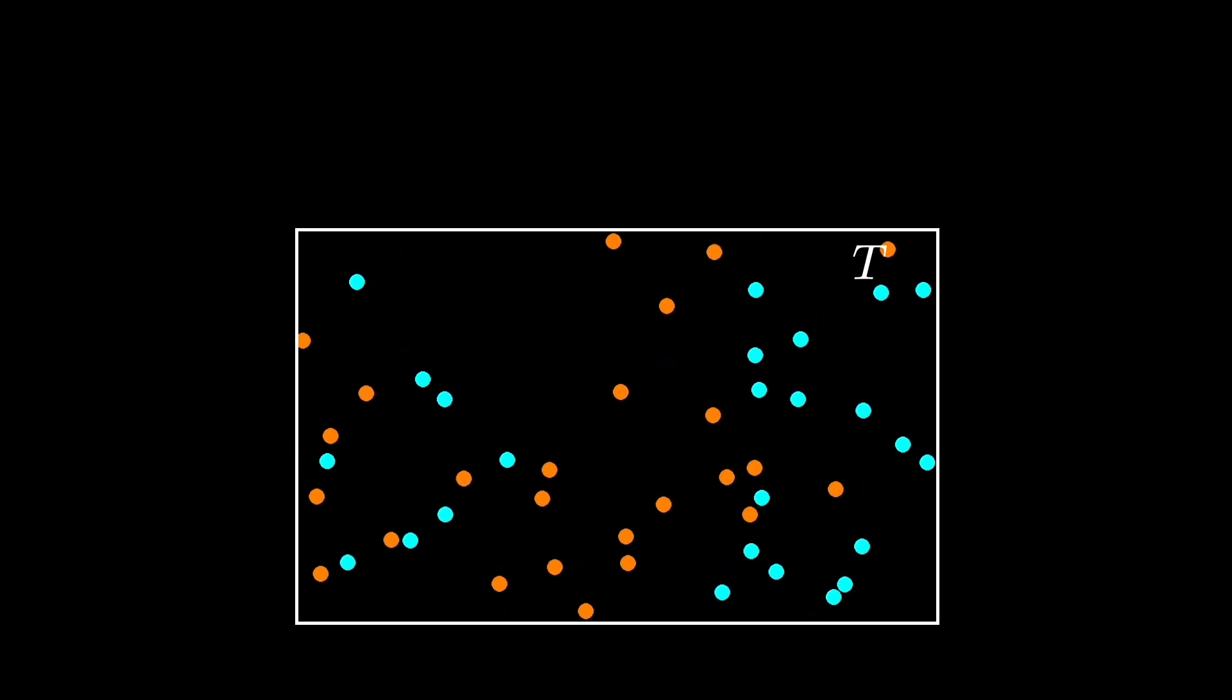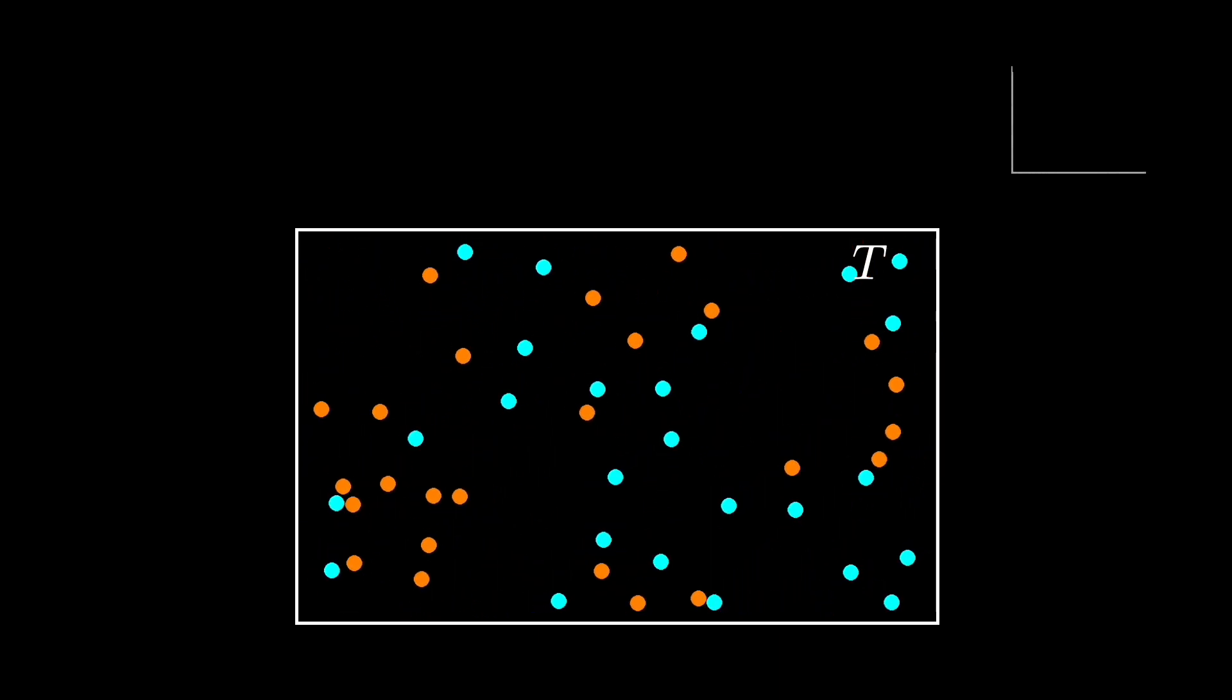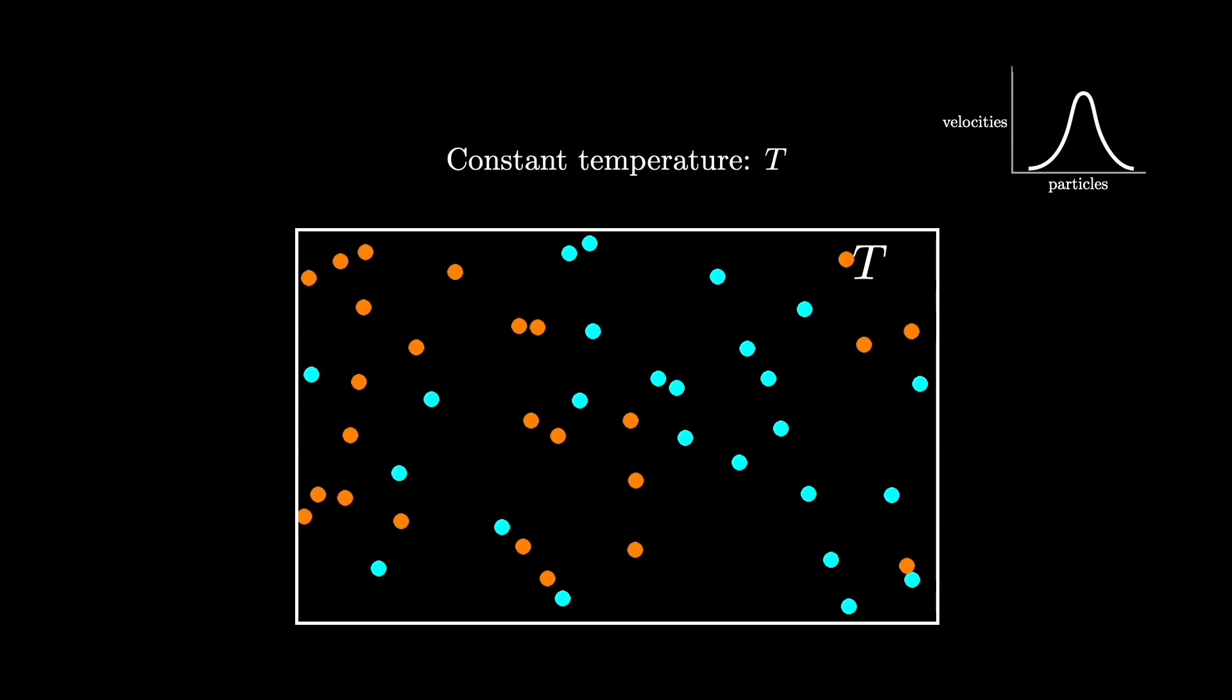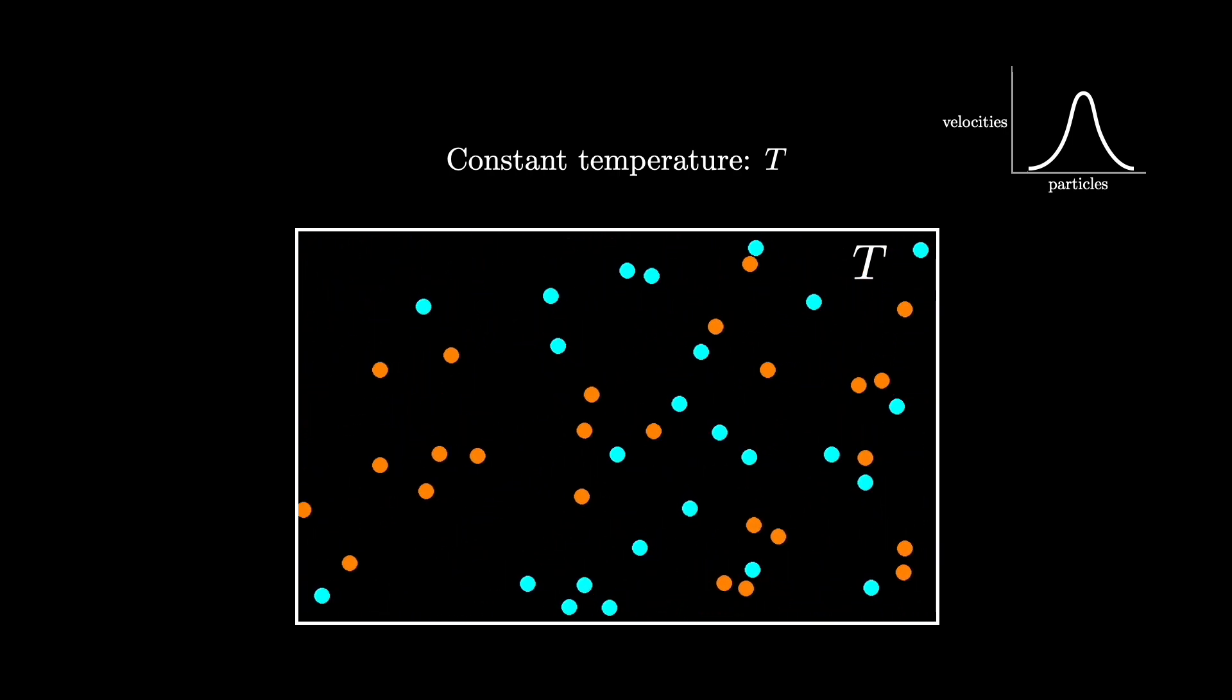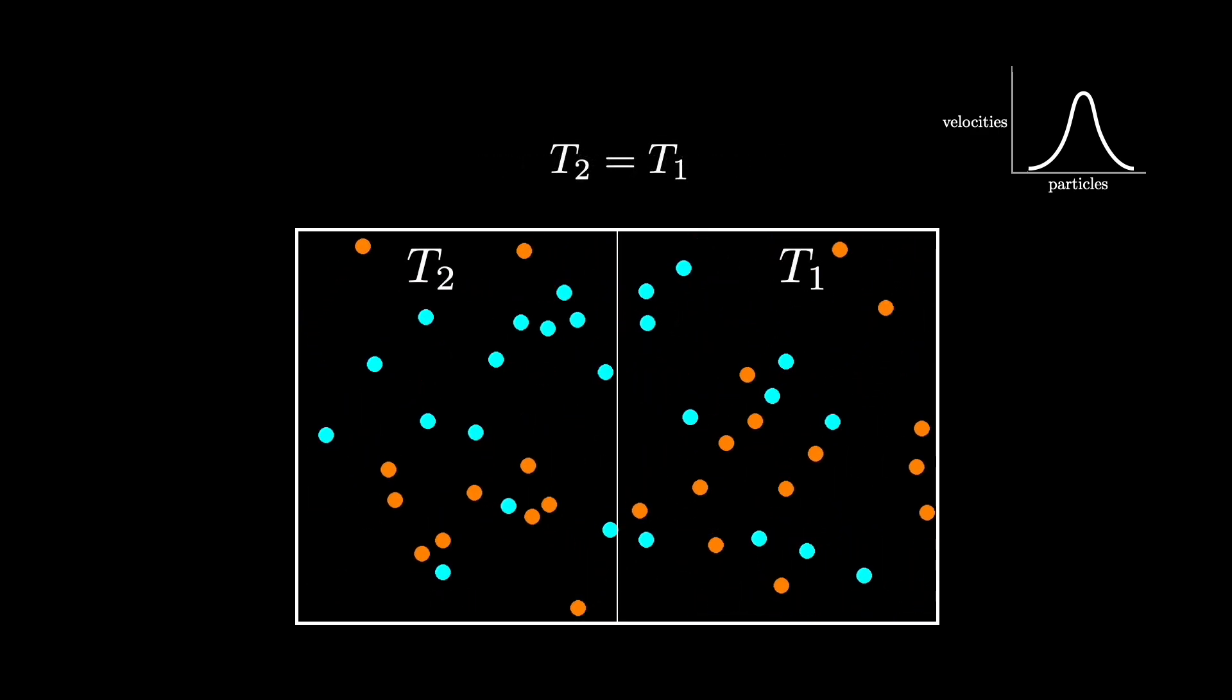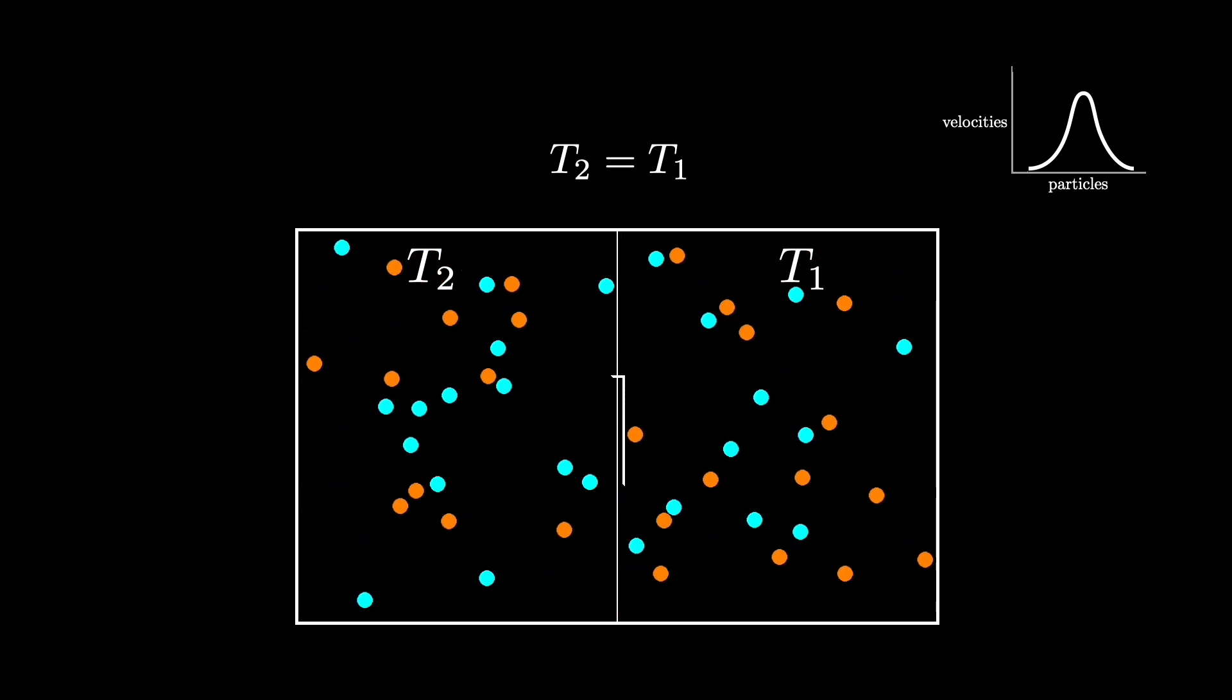The setup of the thought experiment is as follows. Begin with a box that contains gas at some constant temperature T. Although each of the gas molecules will have different speeds that follow a distribution, the average speed of all the molecules will depend on the temperature and is therefore a constant value. Next, place a partition that divides the box in two halves. The two sides are now filled with gas at the same temperature and are in thermal equilibrium.